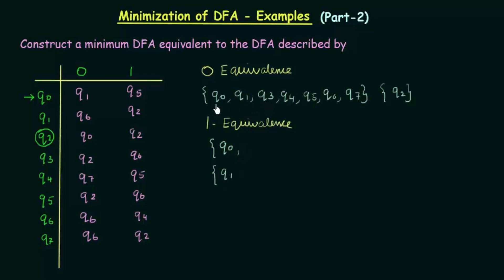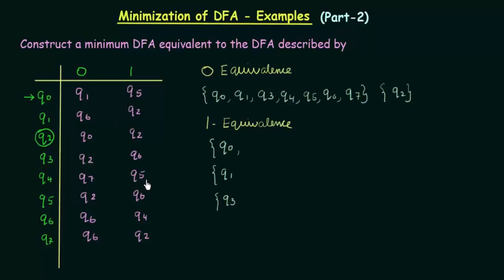Now let me check Q3 with Q0. On getting input 0 they go to Q1 and Q2. Q1 is in this set and Q2 is in another set, so Q0 and Q3 are not 1-equivalent. Now let me check if Q1 and Q3 are 1-equivalent. On getting input 0 they go to Q6 and Q2 — Q6 is in this set, Q2 is in another set — so Q3 and Q1 cannot be 1-equivalent either. I have to make a separate set for Q3. Now let me check Q4 with Q0. On getting input 0 they go to Q1 and Q7, which fall in the same set. On getting input 1, Q0 goes to Q5 and Q4 also goes to Q5 — they are the same state. Hence Q0 and Q4 are 1-equivalent.